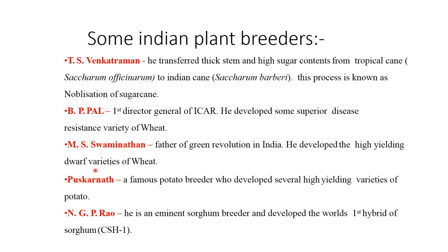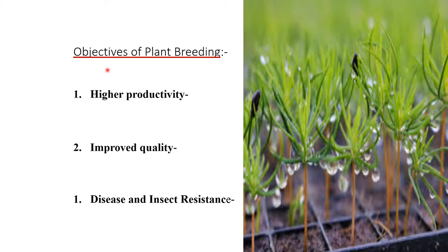M.S. Swaminathan, the father of the Green Revolution in India, developed high-yielding dwarf varieties of wheat. Pushkarnath was a famous potato breeder who developed several high-yielding varieties of potato. N.G.P. Rao is an eminent sorghum breeder who developed the world's first hybrid sorghum, CSH-1.